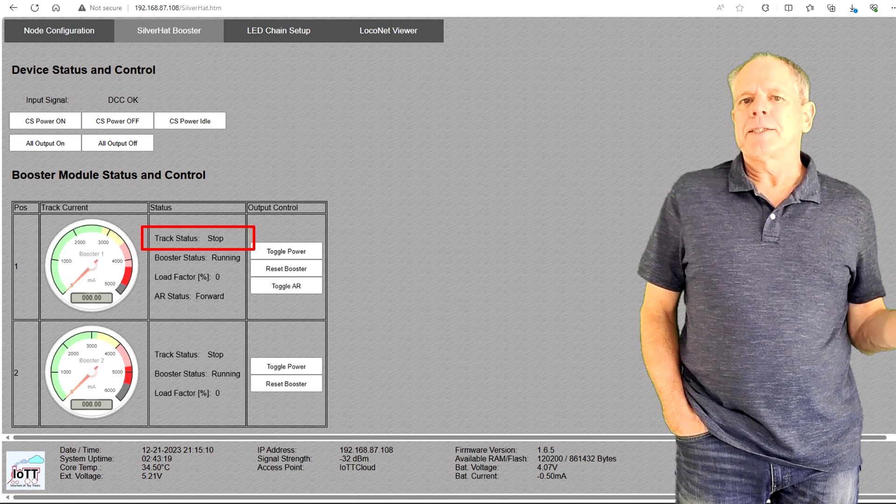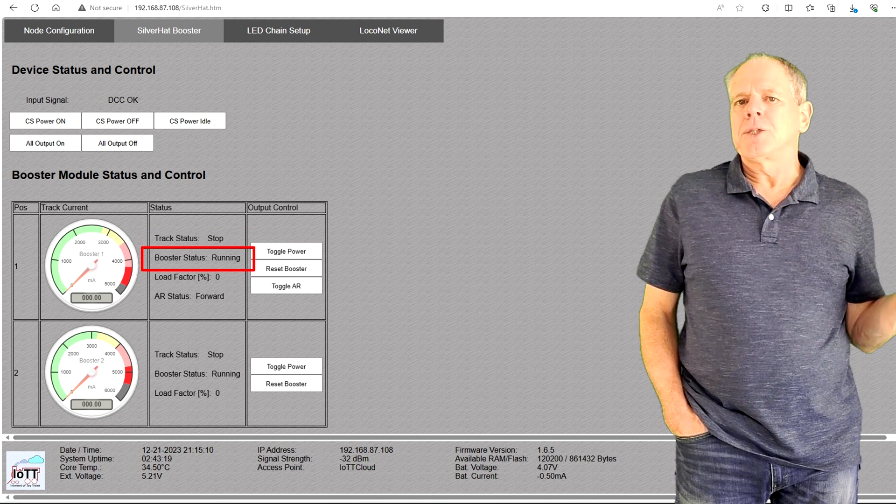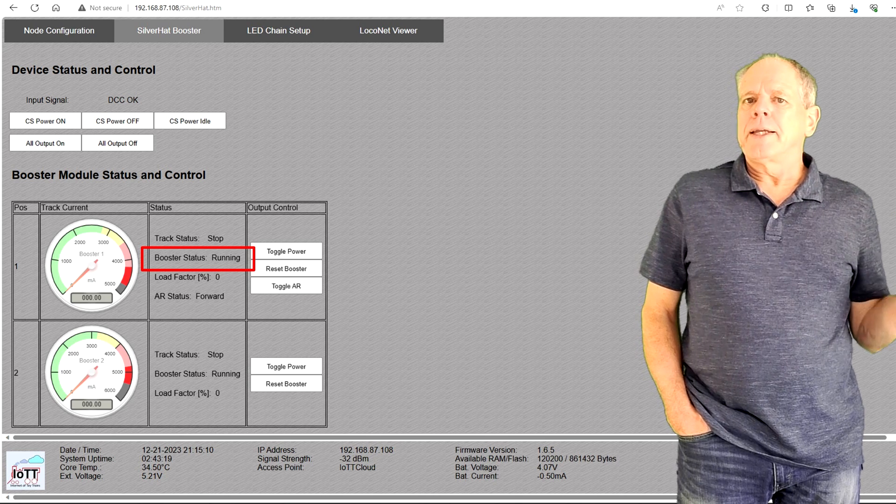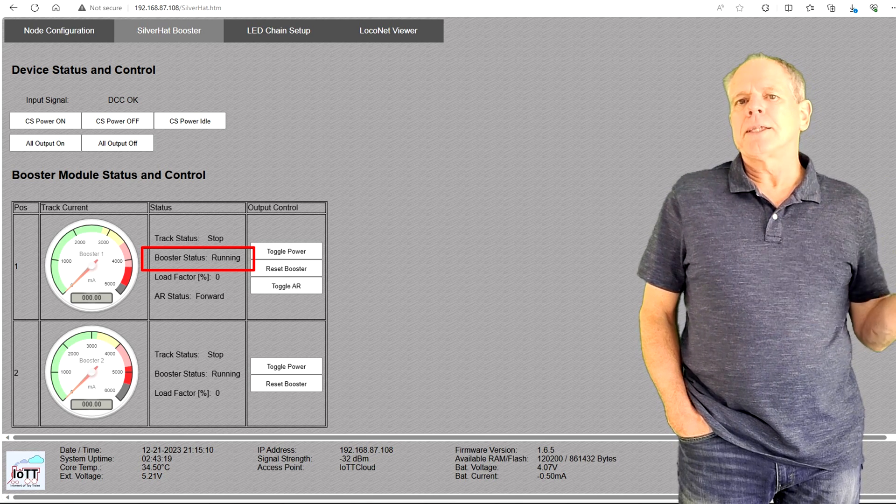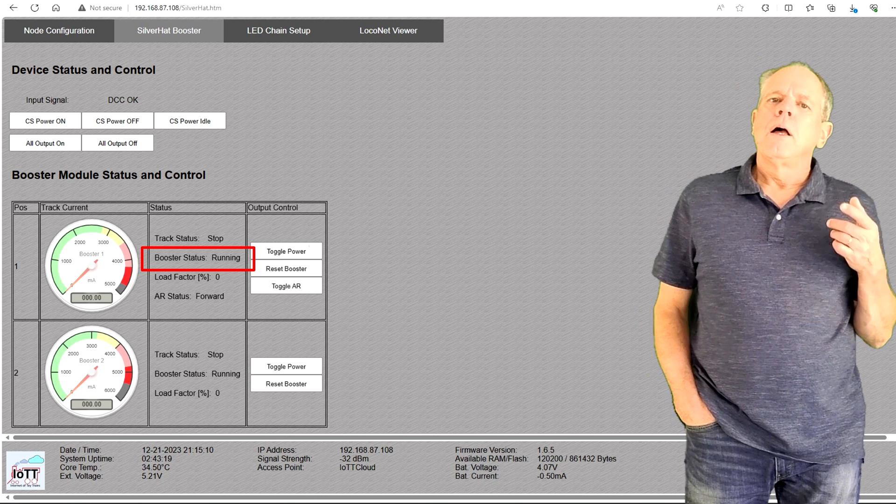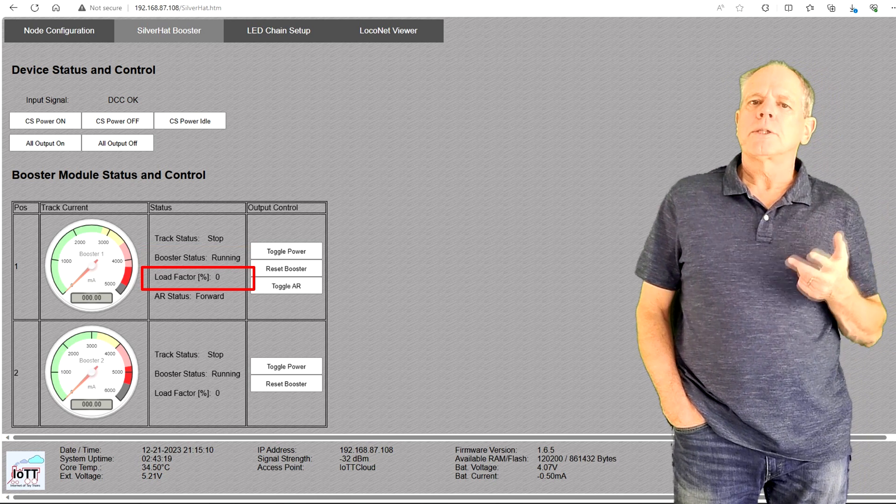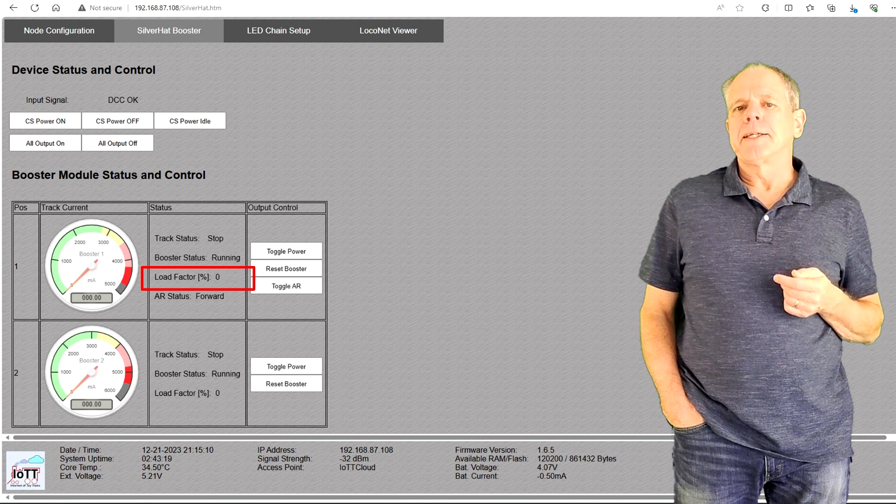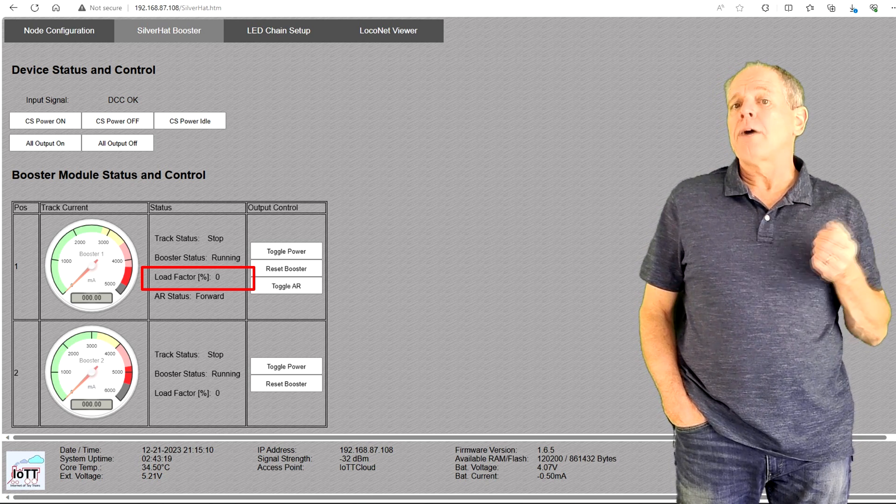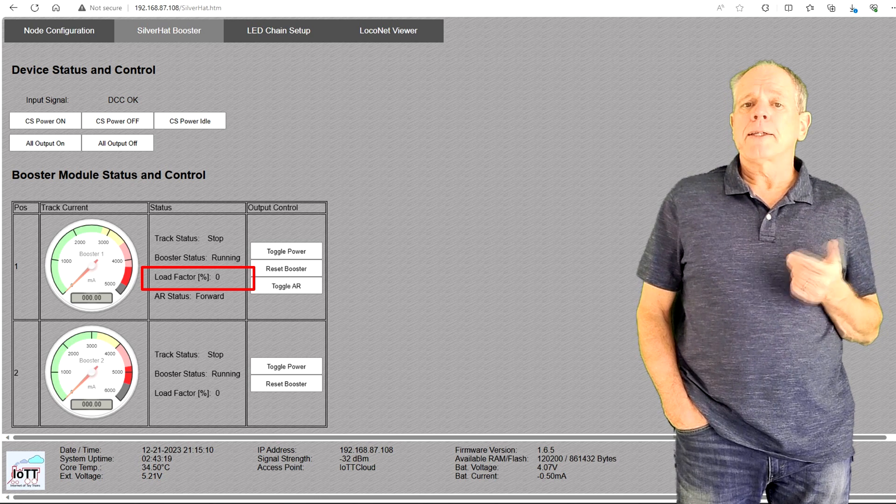The booster status reflects the internal status. If everything is okay, it shows running, but it also can indicate short circuit or waiting for reset, depending on the selected reset model. The load factor shows the thermal status of the booster. If it goes to over 120%, the booster will go in a cool down mode until the load factor is back to 60%.